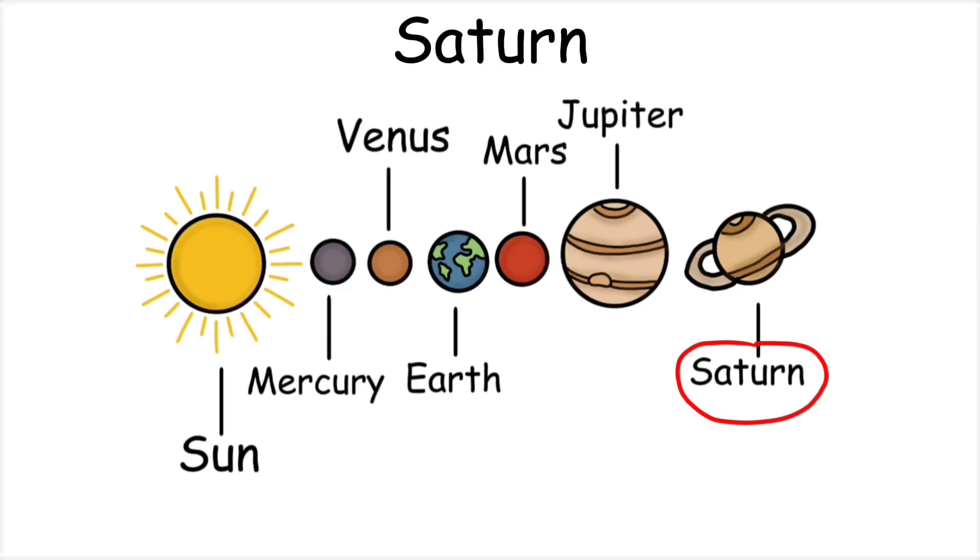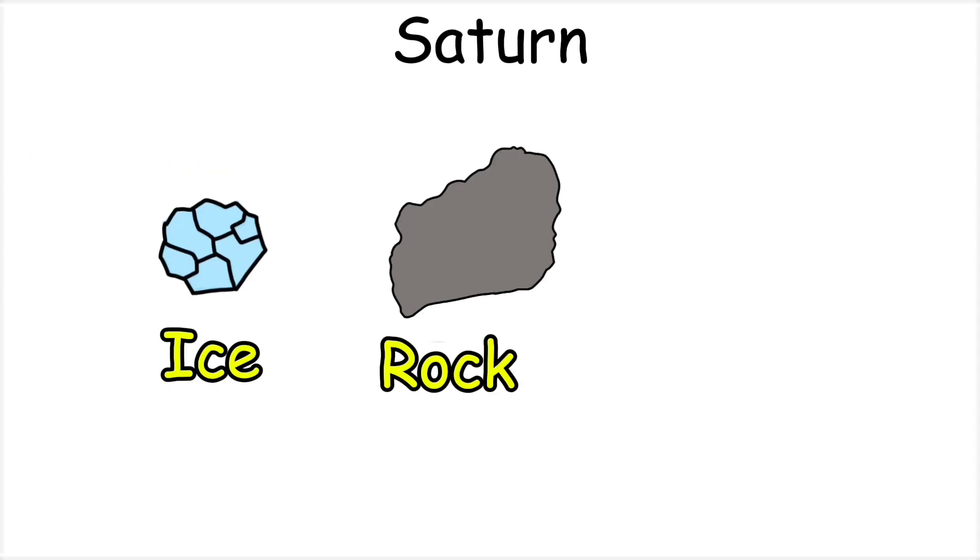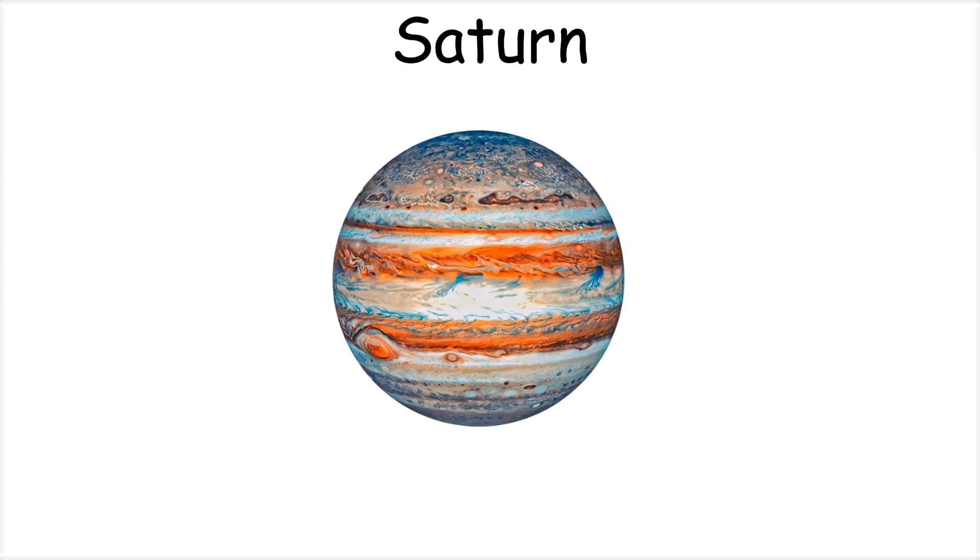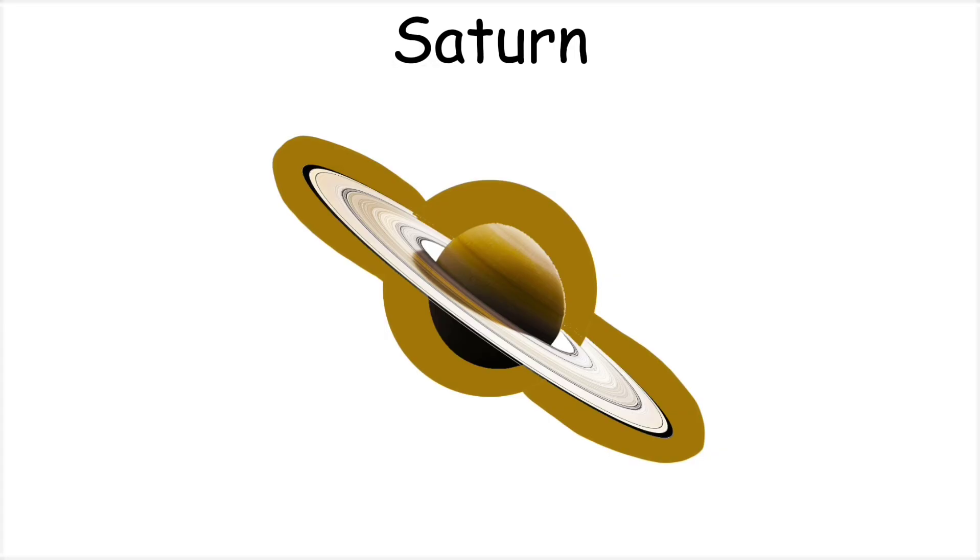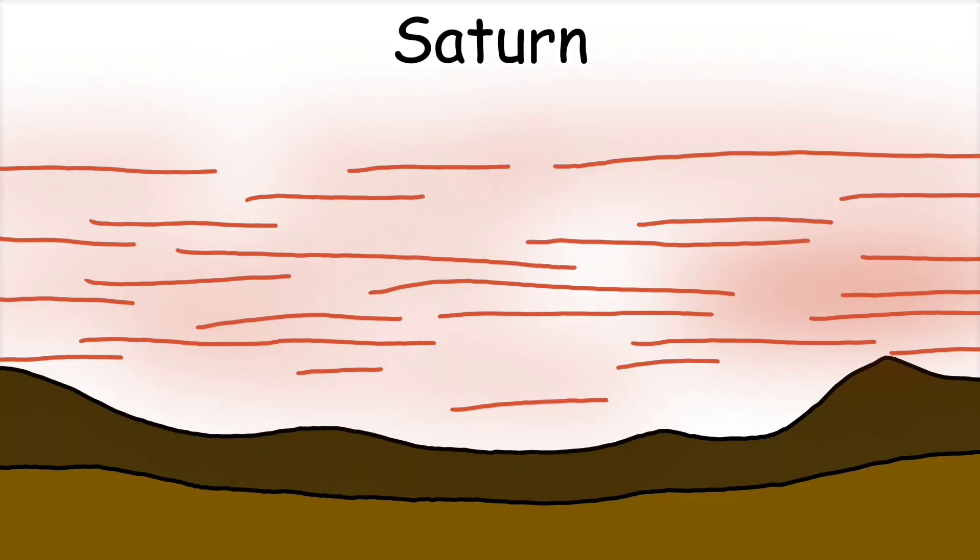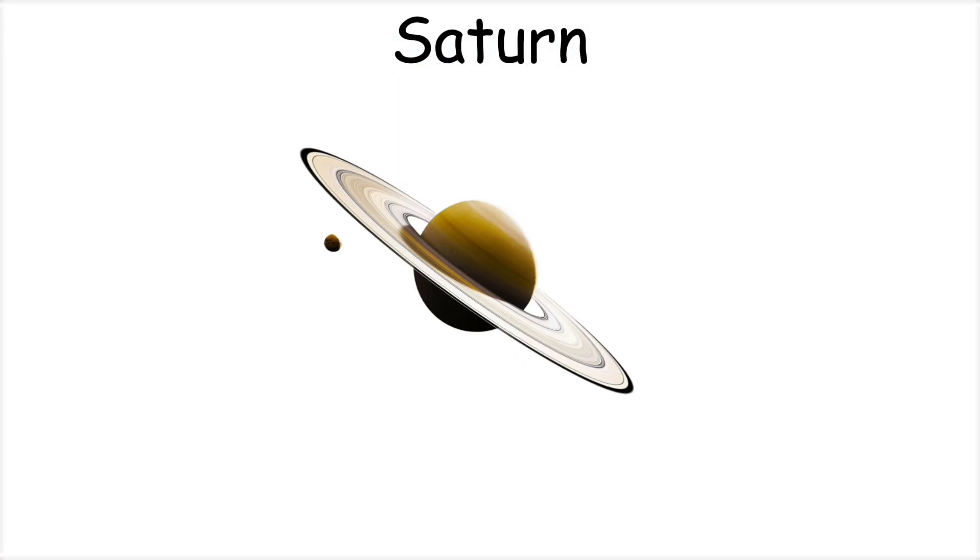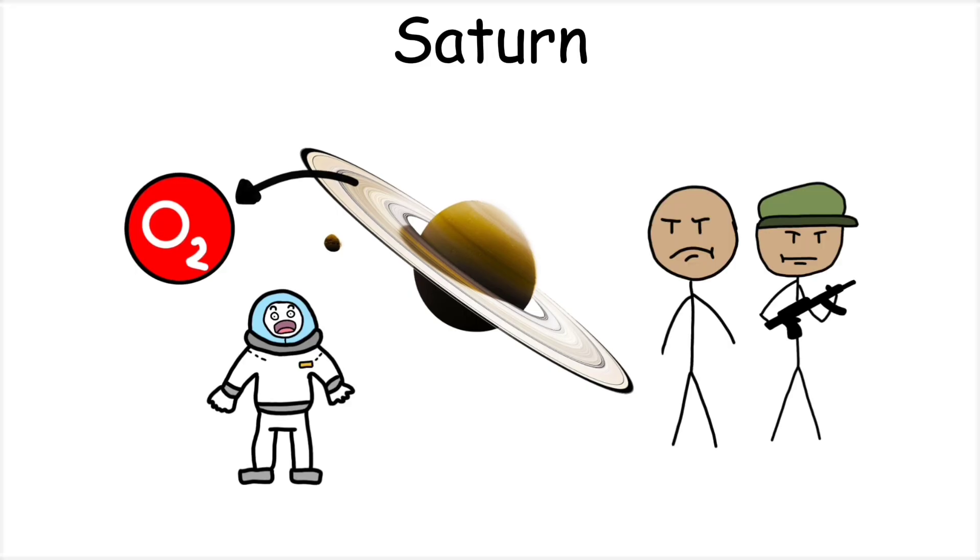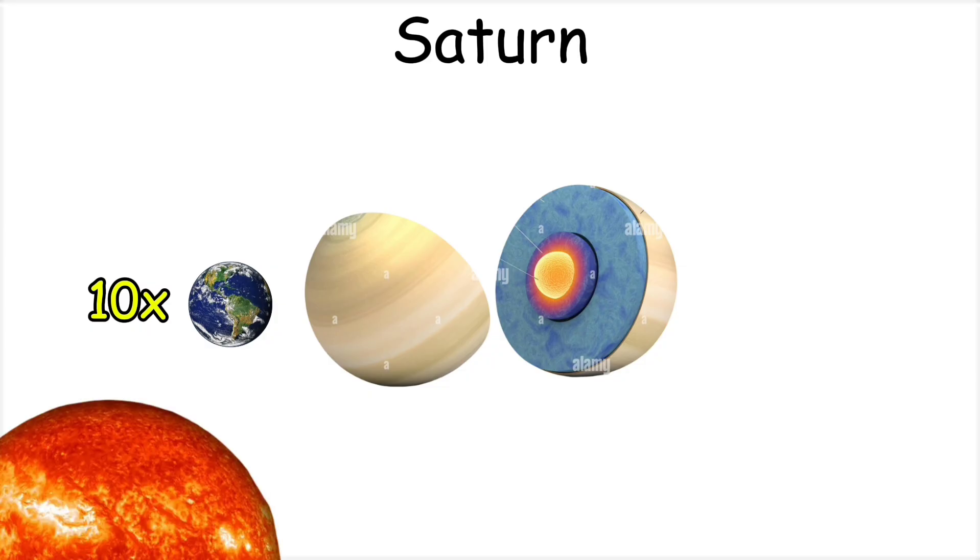Saturn is the second largest planet in our solar system and is best known for its spectacular rings, made of ice, rock, and dust. Like Jupiter, Saturn is also a gas giant and is surrounded by many meteors, which can cause serious problems for any spacecraft. Its atmosphere is made mostly of hydrogen and helium, with strong winds reaching up to 1,800 kilometers per hour, even faster than those on Jupiter. The temperature in its upper clouds is around minus 178 degrees Celsius, while the deeper layers become extremely hot due to massive pressure. Saturn has no oxygen to breathe, making human survival impossible. Its core is so large that it could fit about 10 Earths inside, and it is so hot that it is even hotter than the surface of the Sun.